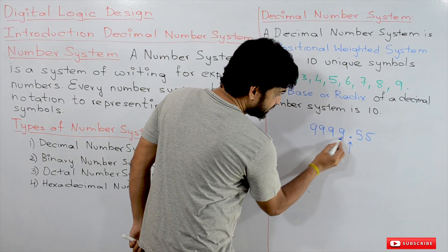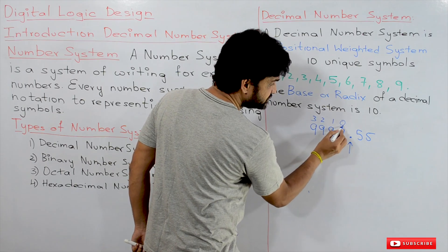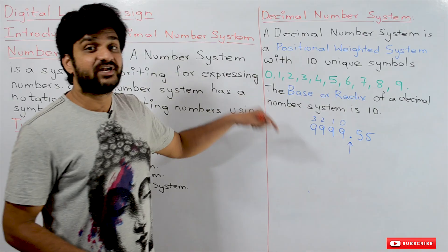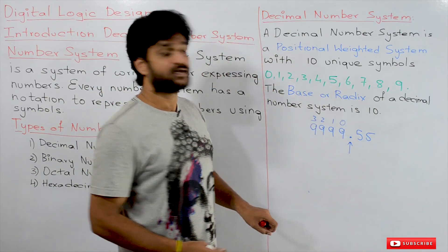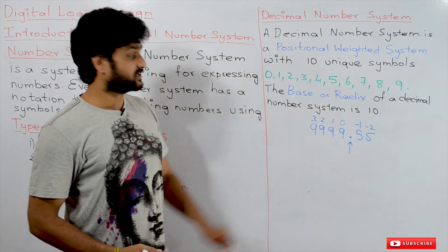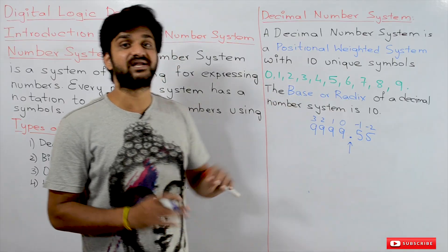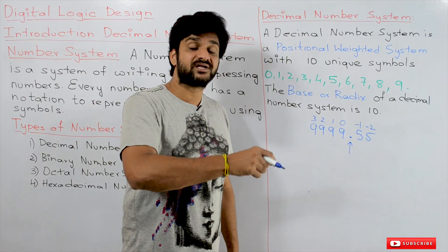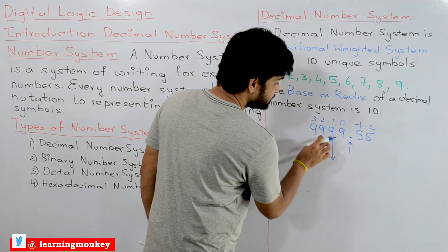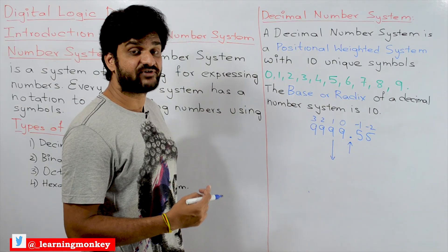Starting to the left of the decimal point, positions start from 0 and increase: position 0, position 1, position 2, position 3, and so on. To the right of the decimal point, positions start from -1 and decrease: -1, -2, and so on. The value of a symbol at a given position in a decimal number depends upon that position.